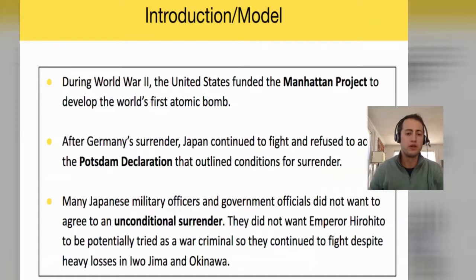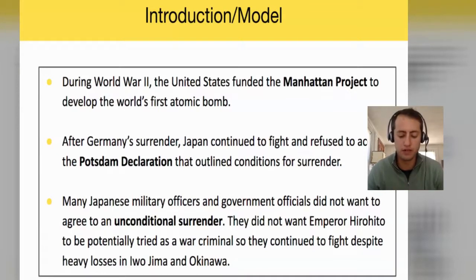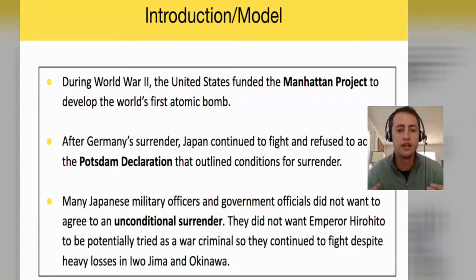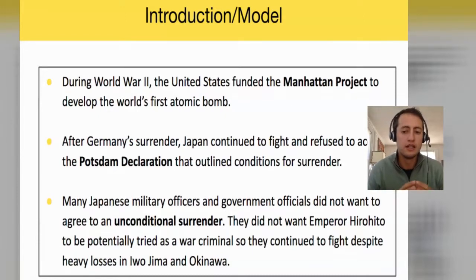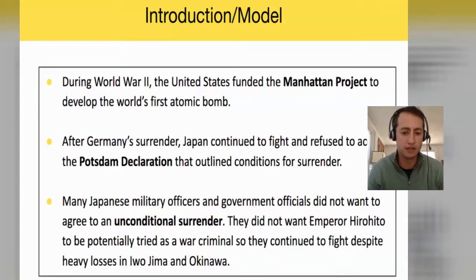Before we jump into our reading, here's a little background information. During World War II, the United States funded the Manhattan Project — a project with some of the world's best scientists in which they were trying to develop an atomic weapon. The next thing we need to know is that after Germany's surrender in the summer of 1945, Japan continued to fight and refused to accept the Potsdam Declaration, which outlined the conditions for their surrender.